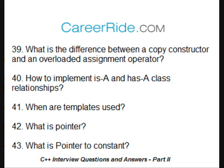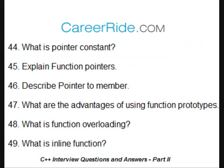What is a pointer? A pointer is a variable that holds a memory address, which is the location of another object in memory. What is a pointer to constant? A pointer to constant points to a value that does not change and is declared as const type* name, where type is the data type and name is the name of the pointer. What is a pointer constant? A constant pointer is a pointer which you don't want pointed to a different value — the location stored in the pointer cannot change. It is declared as type* const name.